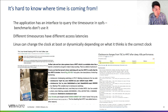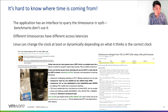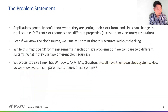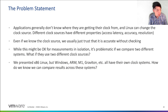It's actually pretty hard for the benchmark to know how it's getting time. The Linux kernel has some interfaces to query what the time source is, but as far as we know, no benchmark really uses it. This is problematic because different time sources have different access latencies, and Linux can change the clock at any time based on what it thinks is the correct clock. We have evidence from recent kernels and processors that even today, the clock that gets selected isn't consistent. While this is okay for systems in isolation, it's a real issue when we have to compare against other systems.